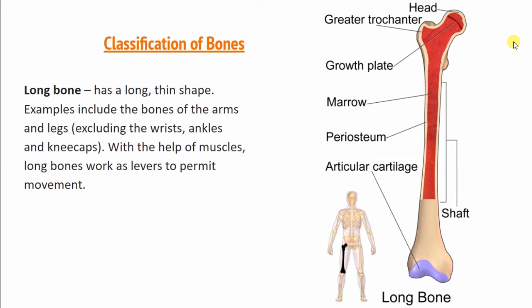Long bones have a long, thin shape. For example, we include the bones of the arms and legs, excluding the wrist, ankle, and kneecap. The bones of our arms and legs are our long bones, and they are helpful for movement.